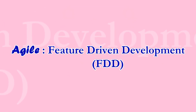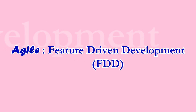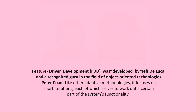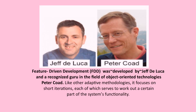Feature-driven development is an agile framework that, as its name suggests, organizes software development around making progress in features. It was developed by Jeff De Luca and the recognized guru in the field of object-oriented technologies, Peter Coad. Like other methodologies, it focuses on short iterations, each of which serves to work out a certain part of the system's functionality.